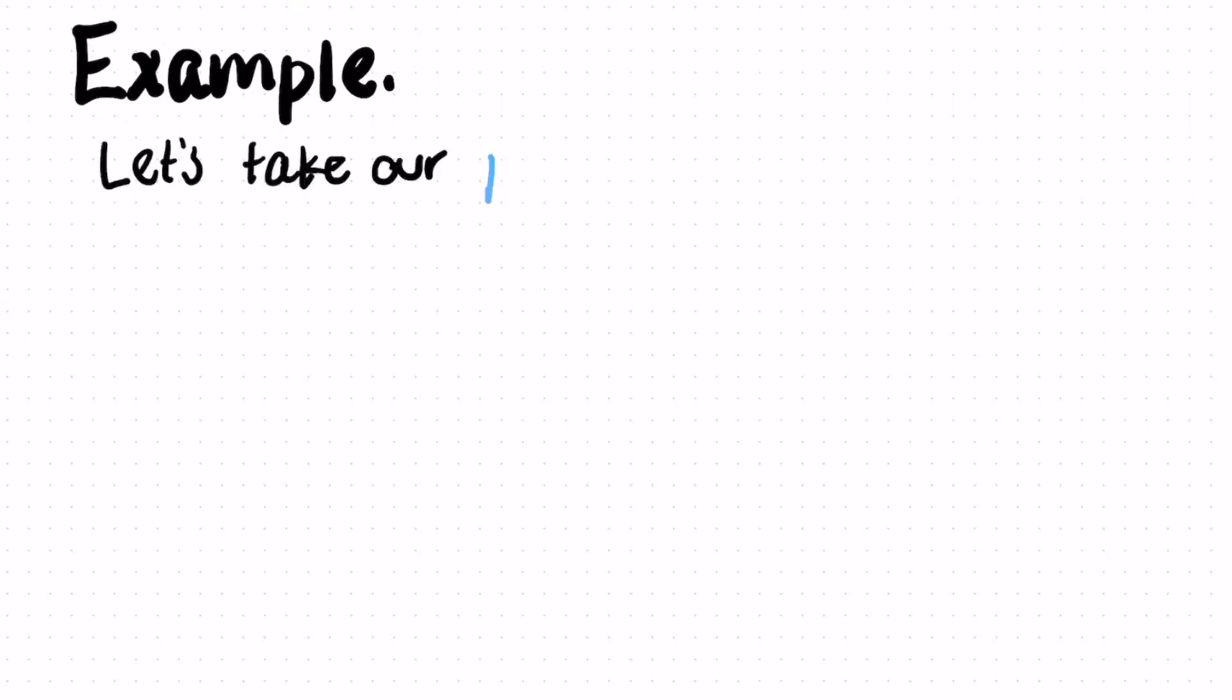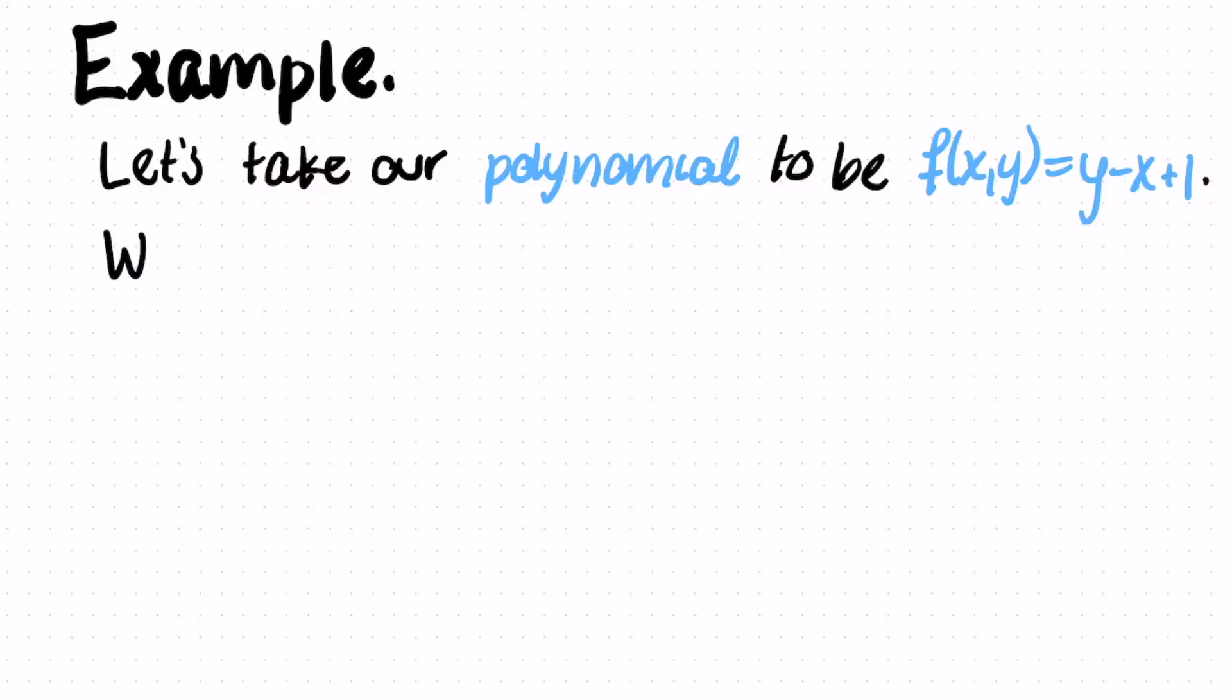If we have a polynomial, which is f(x,y) equals y minus x plus one. So that's a function that takes input two variables. So whenever you give it a number x and a number y, it outputs y minus x plus one. How do we make a shape out of this polynomial? So let's look at all of the points such that f(x,y) is equal to zero.